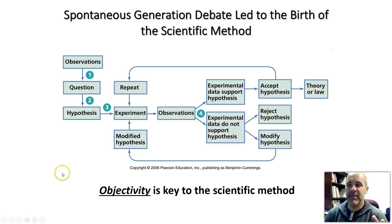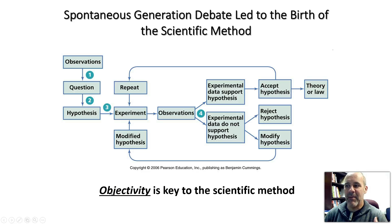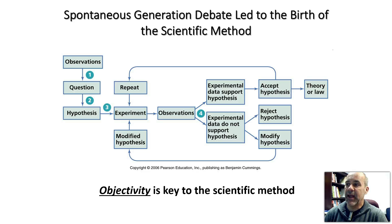Key to the scientific method is objectivity — you try to be objective and keep your personal feelings and emotions out of it. Scientists are human, though, so that can be difficult, which is why in modern science your work is supposed to get checked and duplicated by other scientists to make sure that any conclusions you arrive at are really valid and that you haven't involved your personal biases in coming to those decisions.